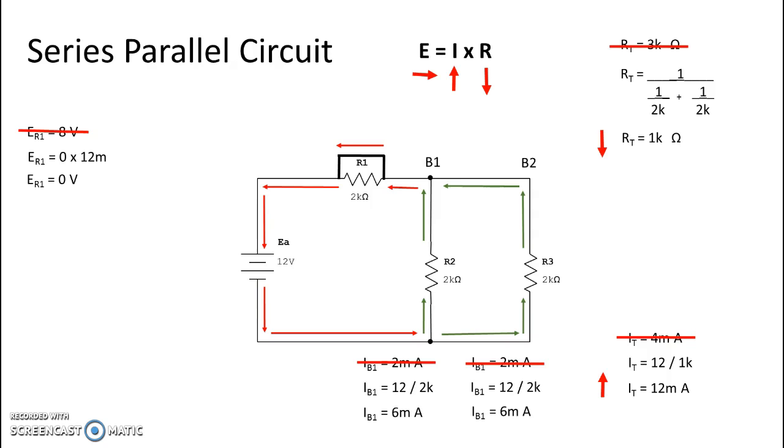R2 and R3 will both see our applied voltage of 12 volts. Pretty quick and easy on the series short in a series-parallel circuit. Next, we are going to cover a short in the parallel portion of our series-parallel circuit.